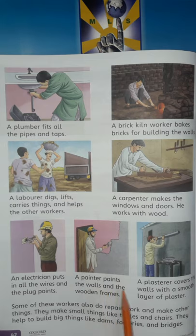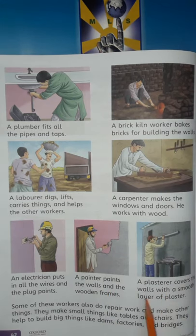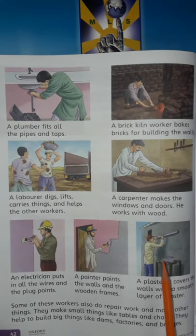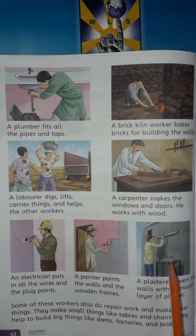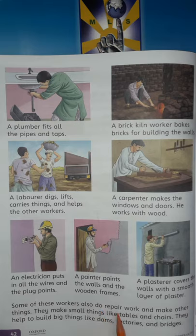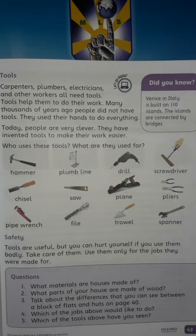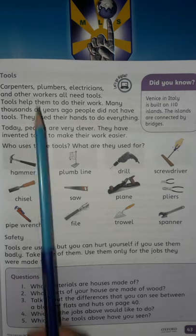A painter paints the walls and the wooden frames. A plasterer covers the walls with a smooth layer of plaster. These are all the professions used to build a house. You might have seen these people in your house for repairs. Some of these workers also do repair work and make other things — like tables and chairs, and big things like dams, factories, and bridges.